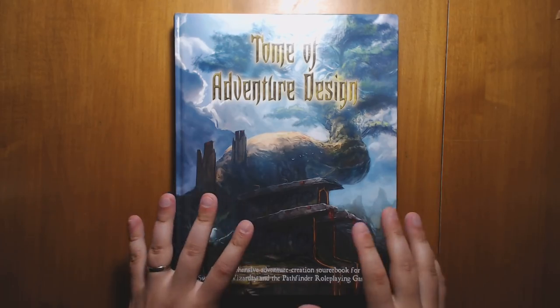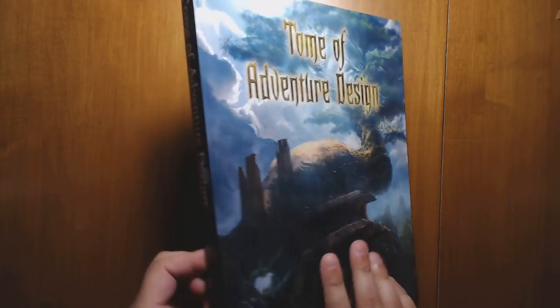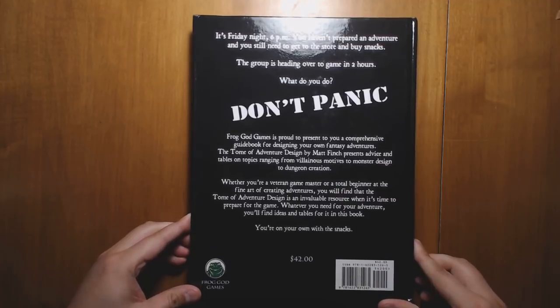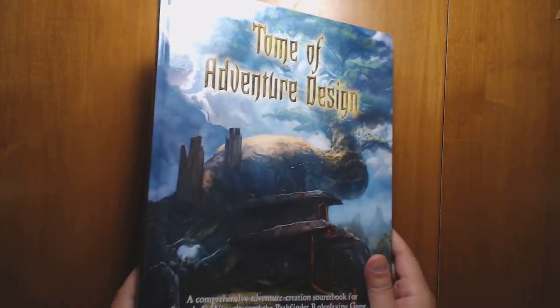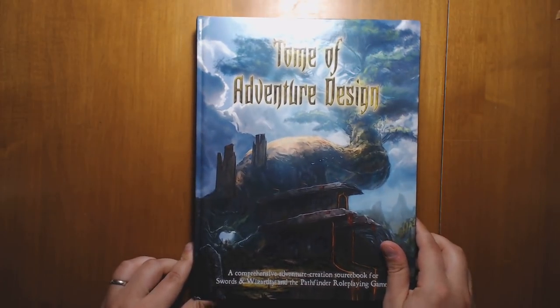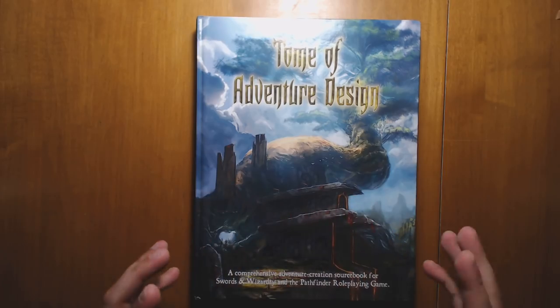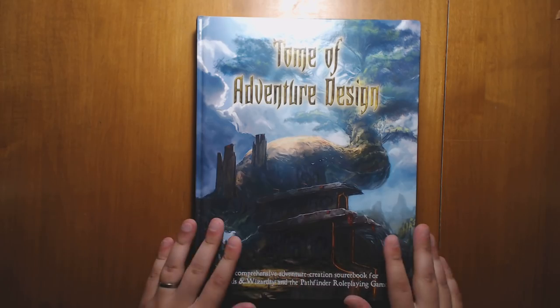This is a copy that I received as a gift from the Frog God people when I played with them at a recent convention. I thought I would take a look at it here. Matt Finch, in case you're not aware, is one of the fathers of the entire OSR movement. And his game Swords and Wizardry, which is a retro clone of original D&D, is a really fantastic game and is a landmark in the whole hobby.